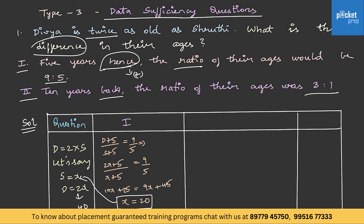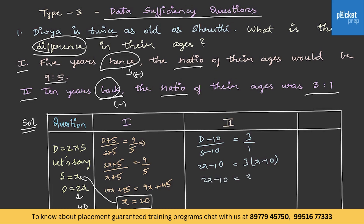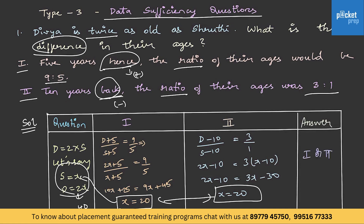Using Statement 1, we can find the difference between Divya and Sruti. Now let's check Statement 2. 10 years back, ratio is 3 to 1. D minus 10 by S minus 10 equals 3 by 1. So 2X minus 10 equals 3(X minus 10), giving 2X minus 10 equals 3X minus 30, so X equals 20 — the same value. Therefore either Statement 1 or Statement 2 alone is sufficient to answer the question.